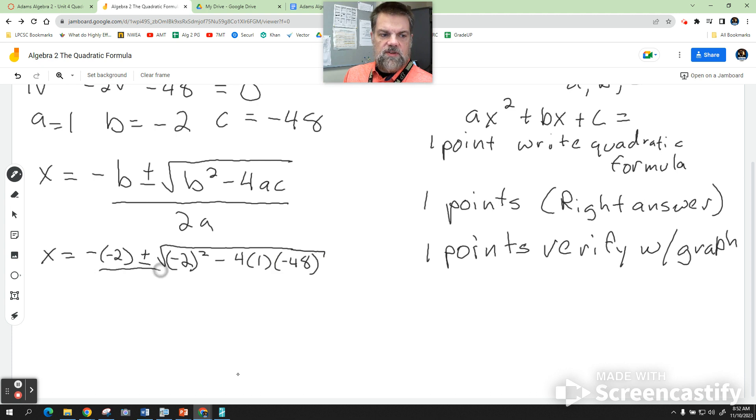All over 2 times a, which is 1. Now this is the hard part: you've got to do one step at a time. When you subtract a negative number, what does it become? In other words, when you minus a minus, it becomes a positive 2. Negative 2, and then you've got to do this square root stuff. What is negative 2 squared? Positive 4.